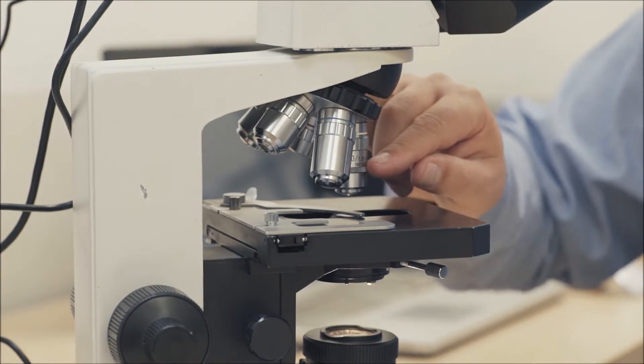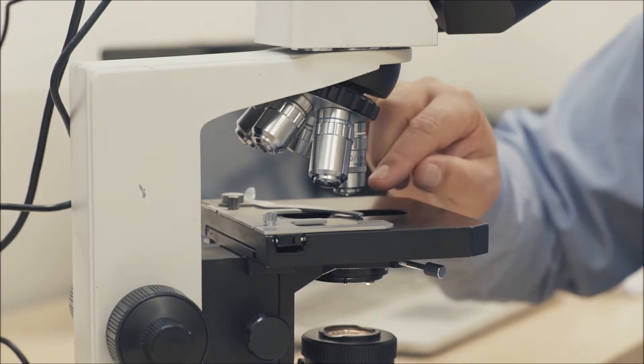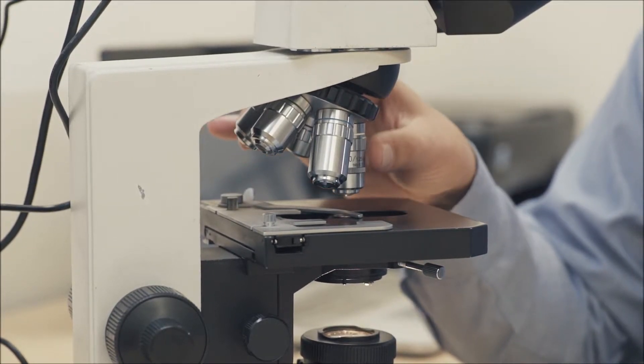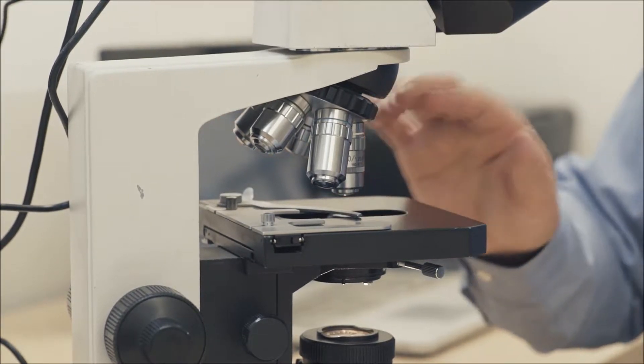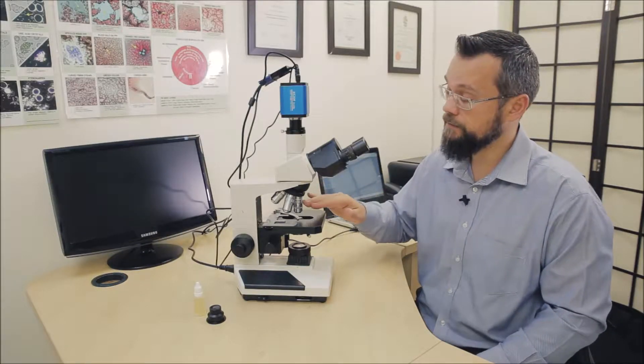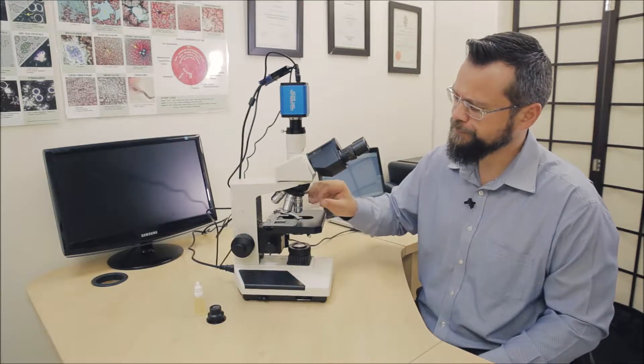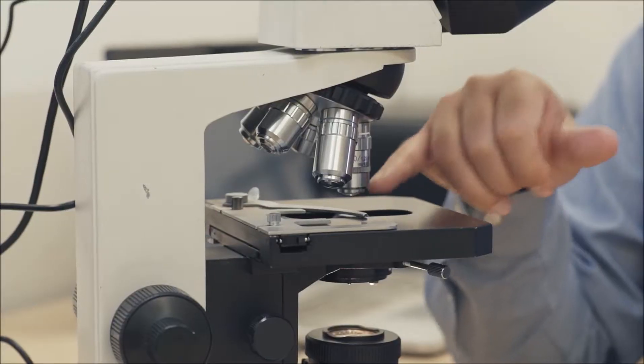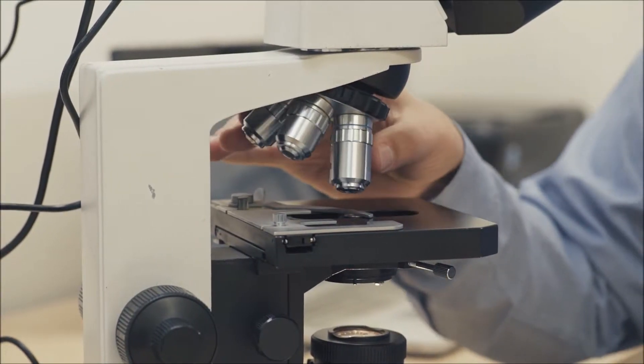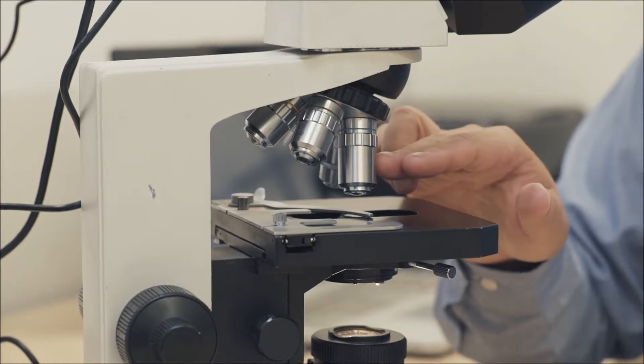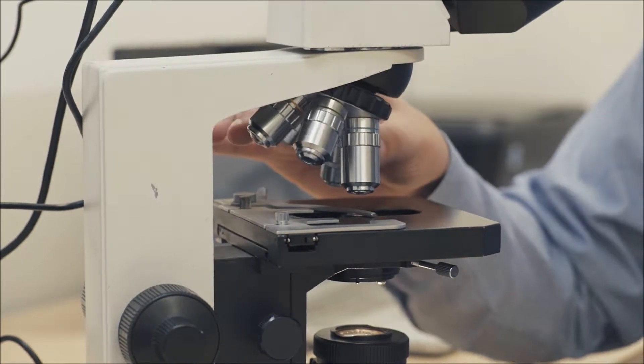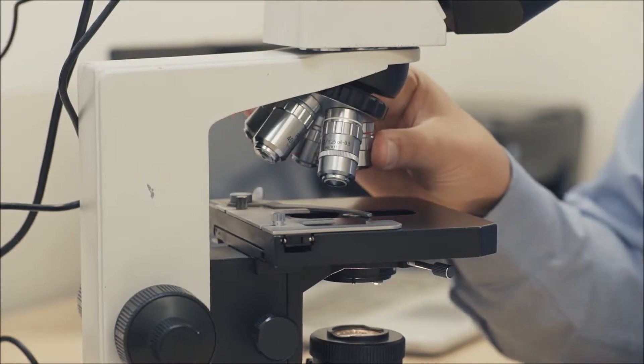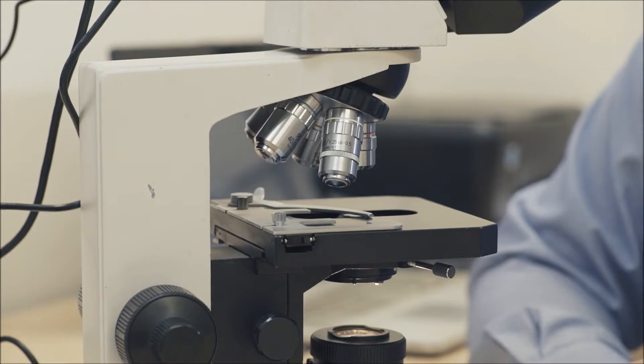The last one, the hundred times objective, the white color coded one, would need a bit of oil. You'll see oil printed on it as well. You will need to place a drop of oil on the front of the condenser for you to actually see through this objective. We will be covering the use of this objective in more detail in a separate video, but it's important to mention that once you've used this objective to be aware that there's oil on there and not to then get oil on any other of the other objectives when you move them back into place.